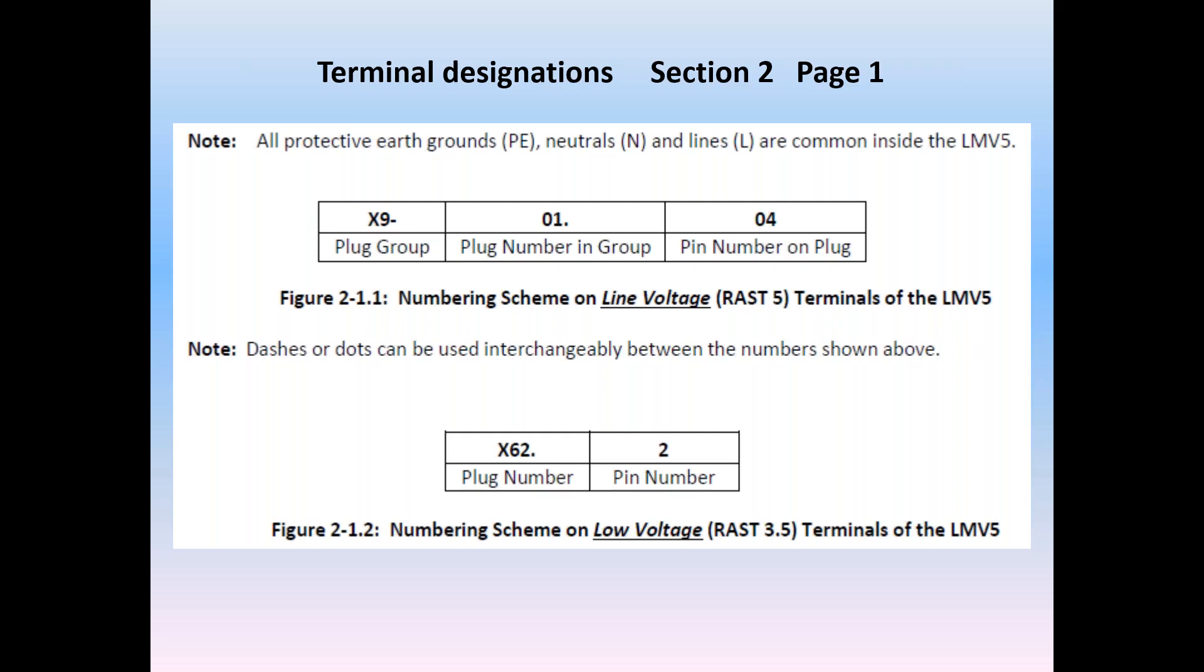Section 2 wiring should be worked along with Section 3 parameters to determine the functions of many of the terminals. Larger white terminals on top of the LMV-5 are high voltage, line voltage connections. These terminal designations have three parts, not unlike somebody's social security number. They designate the plug group, the plug number, and finally the PIN.